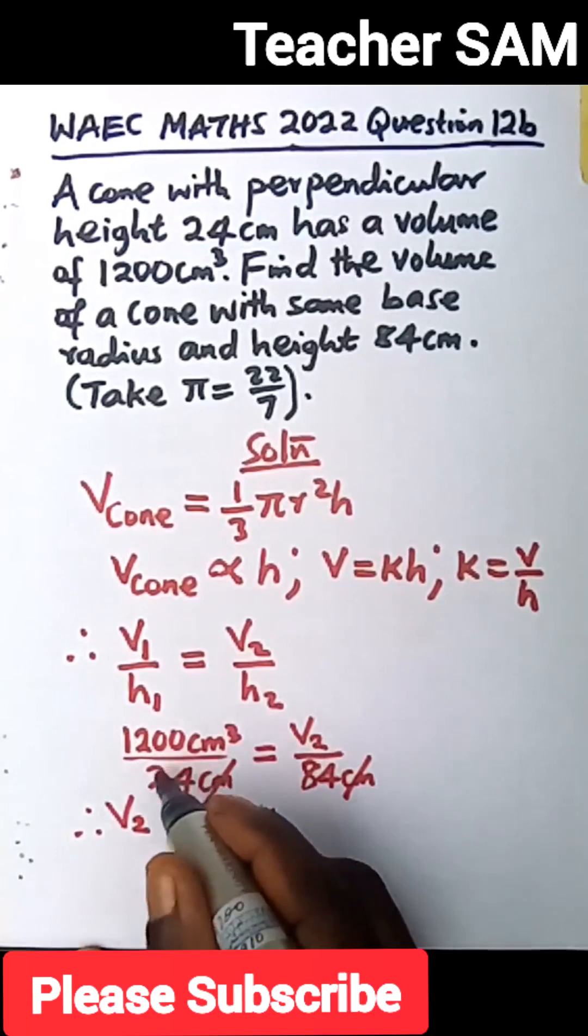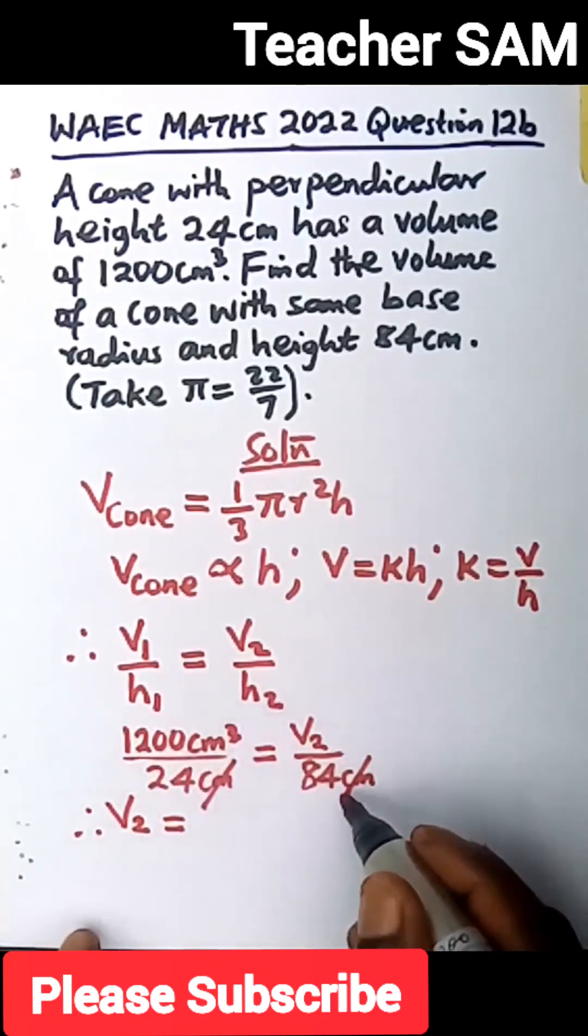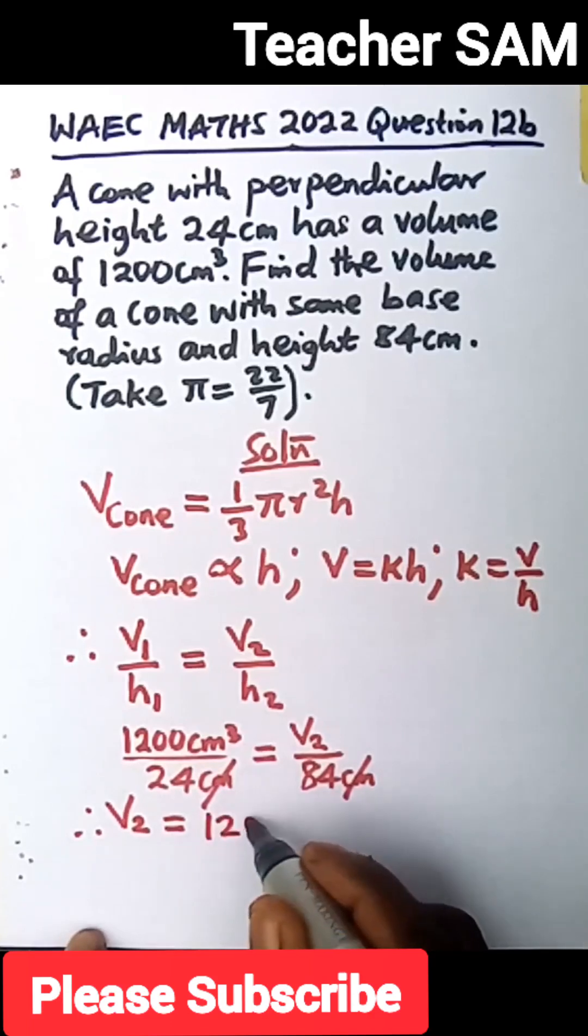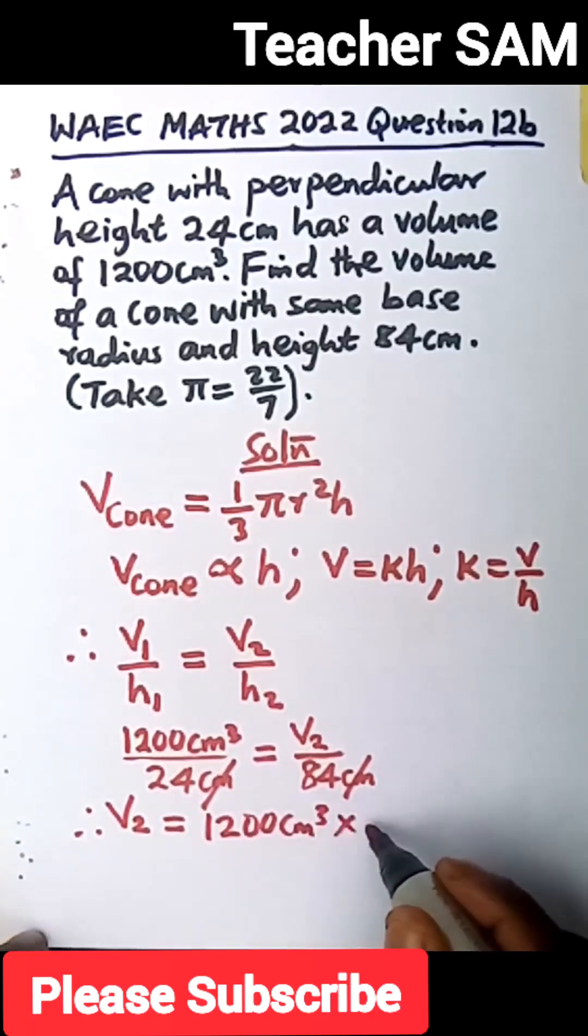Is equal to cross-multiply 1,200 cm cubed times 84. So 1,200 cm cubed times 84.